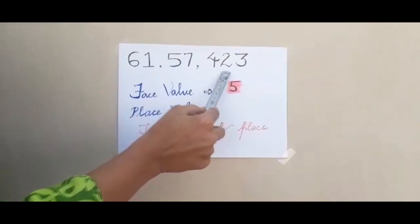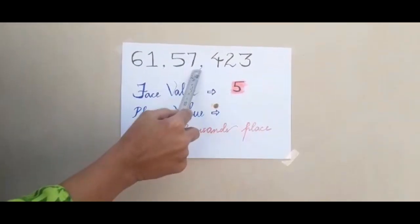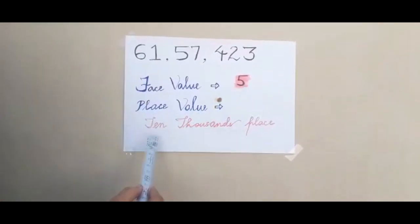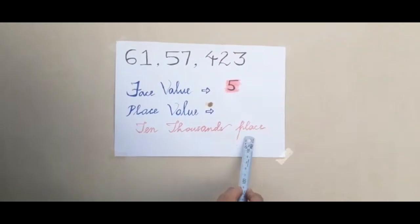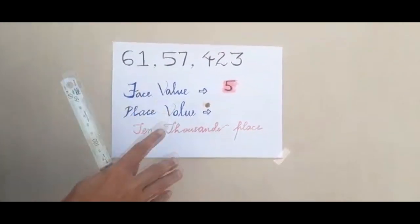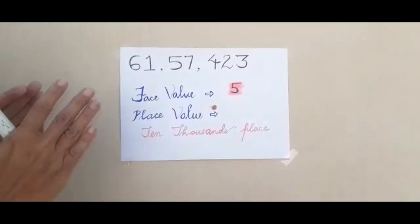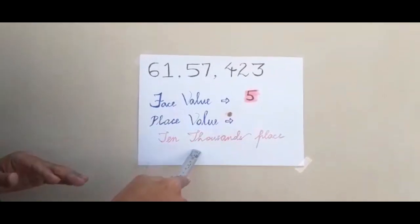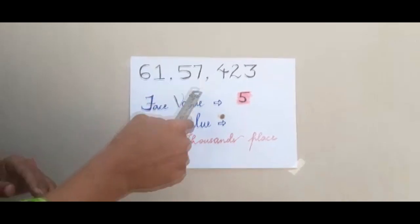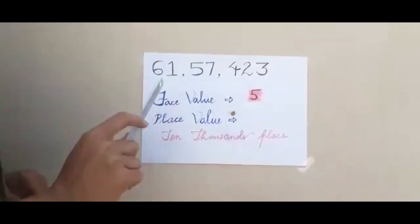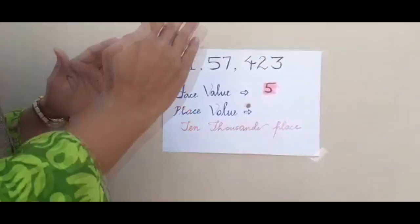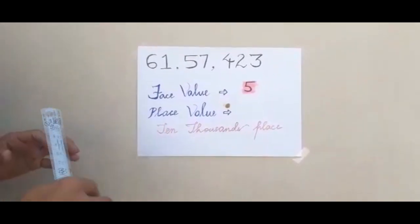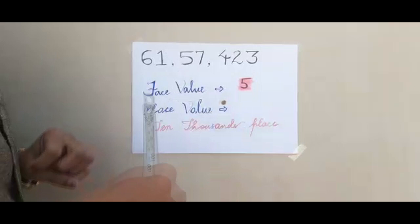Now, the place value of a digit means which position it occupies — ones, tens, hundreds, thousands, ten thousands, and so on. So the place value of five in this number is the ten thousands place. Face value is the digit itself, and place value tells you which place that digit occupies. That is the difference between face value and place value.